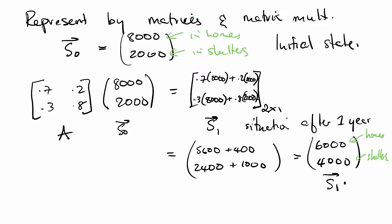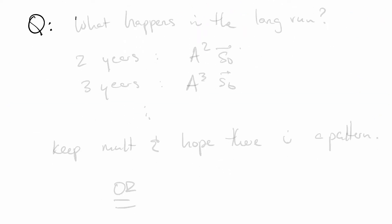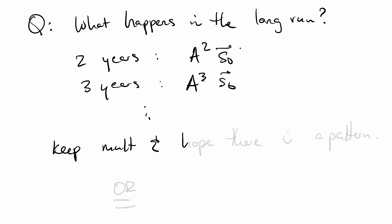So we kind of know what happens next. If we were to ask the same question what happens in the long run, we can say, okay, after two years the way we figure that out is we multiply by the matrix A twice. After three years multiply three times, etc. And then we can keep multiplying and hope that there's a pattern. Or we can do something more intentional.